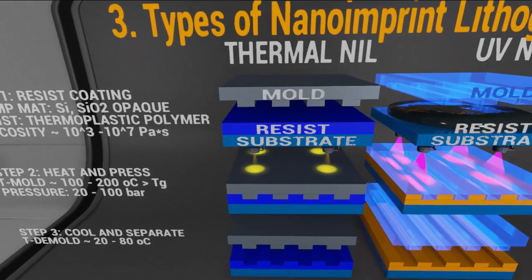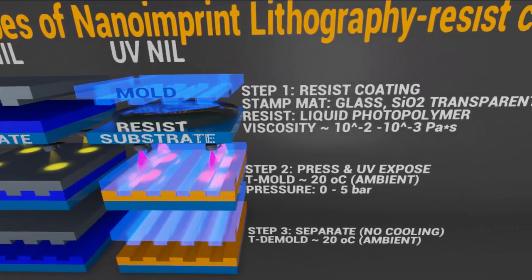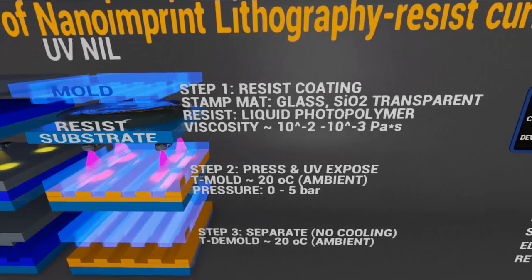Now let's talk about the UV NIL process, which involves imprinting onto a layer of liquid photopolymer resist and curing using UV exposure, which causes resist hardening due to cross-linking in the polymer instead of manipulating the phase change via resist temperature. The remaining imprint mechanism, however, is similar to the thermal NIL process.